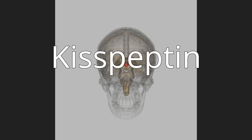Kisspeptins, including Kisspeptin-54 and KP-54, formerly known as metastin, are proteins encoded by the KISS1 gene in humans. Kisspeptins are ligands of the G-protein coupled receptor GPR54.